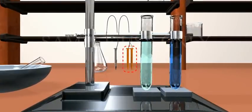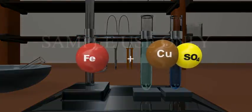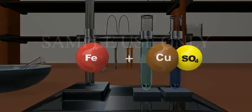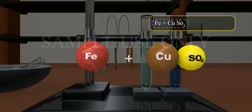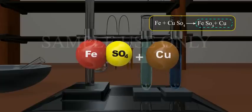The iron nail became brownish in color and the blue color of copper sulfate solution fades because iron displaces copper from the sulfate solution. Fe plus CuSO₄ aqueous gives rise to FeSO₄ aqueous plus Cu solid.